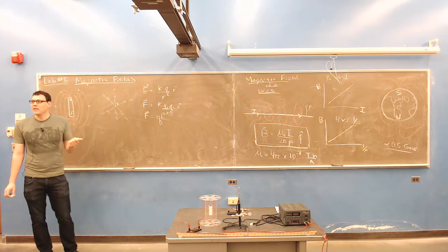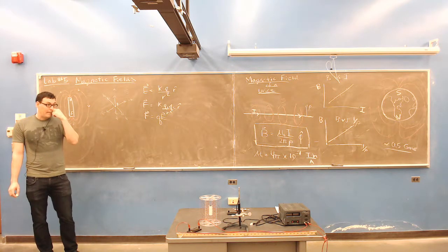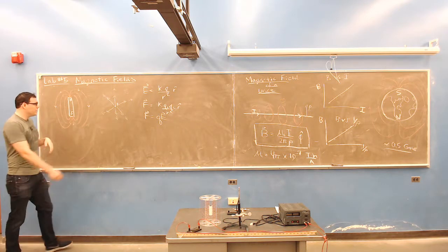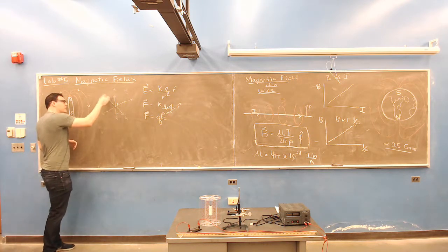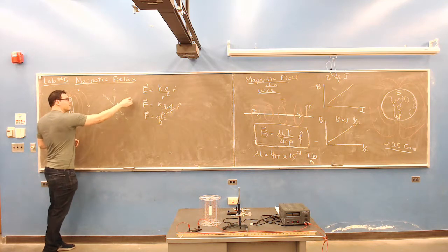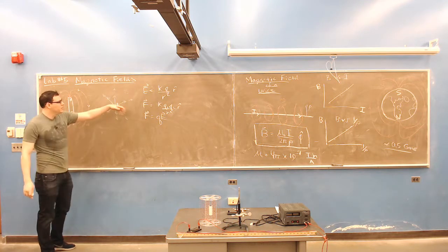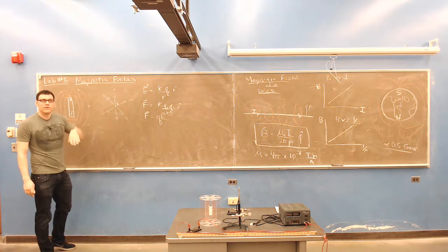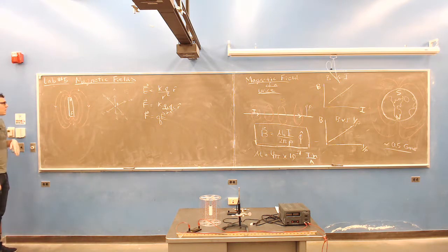Any questions on that? All right, and I drew a little picture here. Here's a point charge with the electric field coming out of it. And I drew this vector a little bit shorter than these vectors to kind of demonstrate that it's weaker further out.